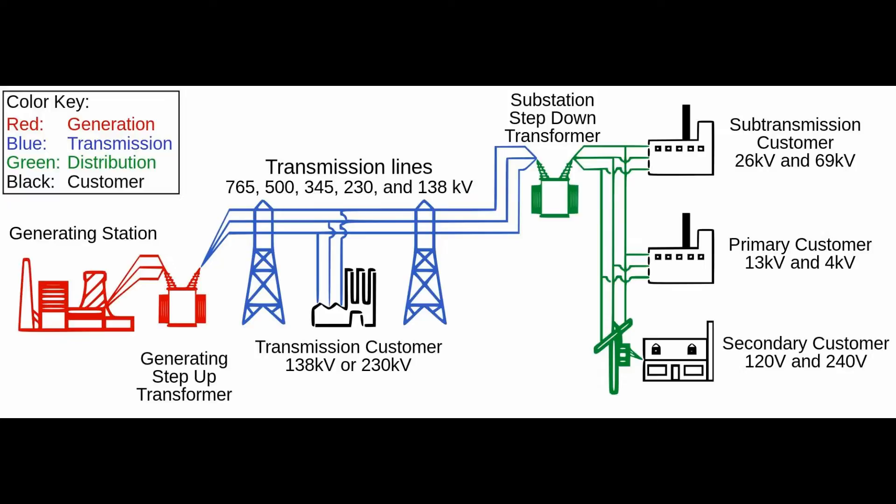The generation station is where they make the electricity — that's shown in red on the picture. Then you, the customer, are going to use it. To get it from generation to the end user — whether industrial or residential — you go through the blue part of the graph, which is the transmission system: big high-voltage lines. The green part is distribution, which steps the voltage back down to something usable and delivers it to all end customers, from industrial down to your own refrigerator.